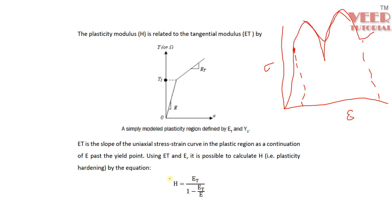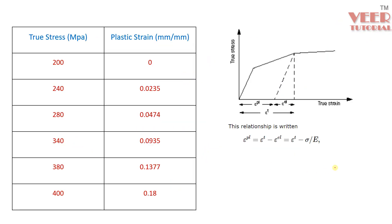In one way, we can define a parameter called H, which is the plastic hardening. This is basically the ratio ET over E, where ET is the slope in the plastic region. The second method is to draw a curve between true stress and true strain. Here, plastic strain equals total strain minus elastic strain. An example of this curve between true stress and plastic strain applies to a material like steel.